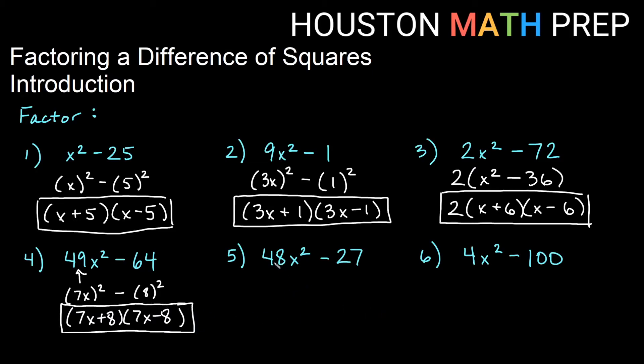Looking at this next one, 48x² minus 27. 48 is not a perfect square. 49 was. 27 is not a perfect square either. But if we look at these, and we see these have a common factor, I could pull out a common factor of 3, leaving us with 16x², and that's a perfect square. Minus 9, that is also a perfect square.